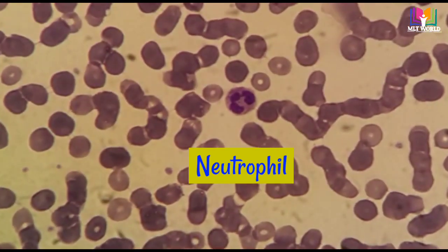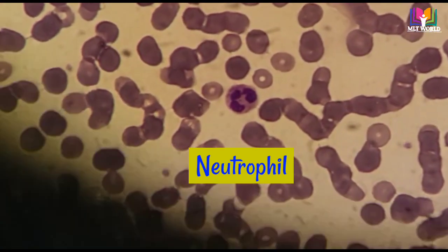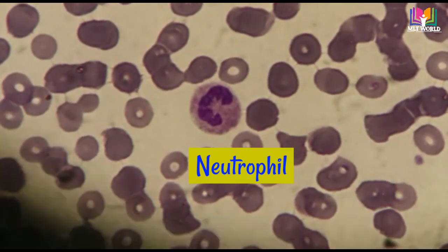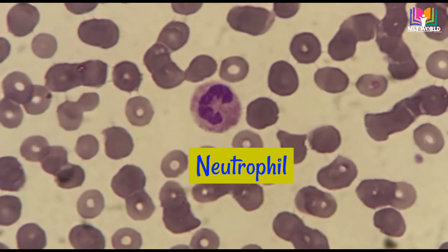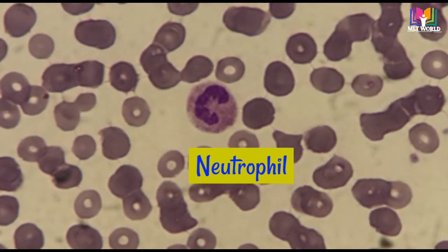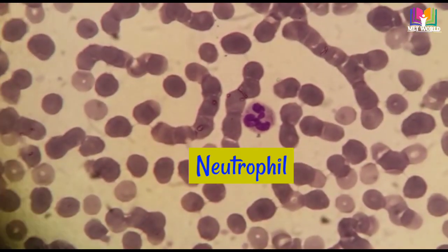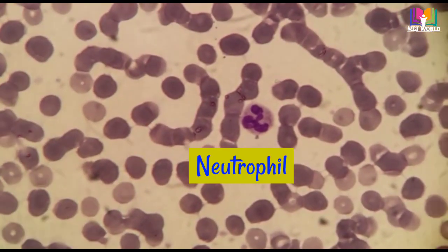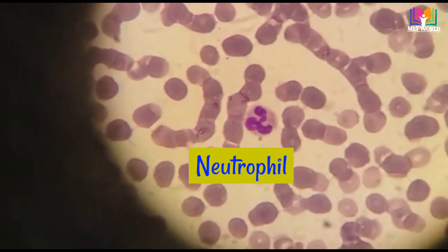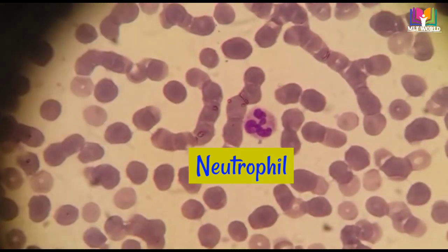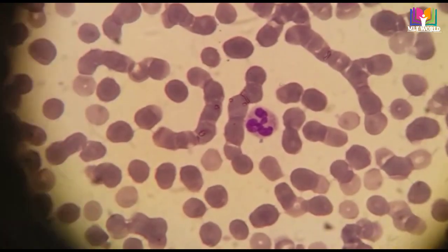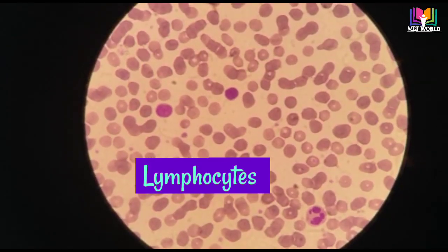You can see this neutrophil is containing almost three lobes of nucleus. This is one other type of neutrophil also — in this you can see there are more nucleus, and in this one you can see at least one, two, three, four nucleus. And in the cytoplasm there are granules also.